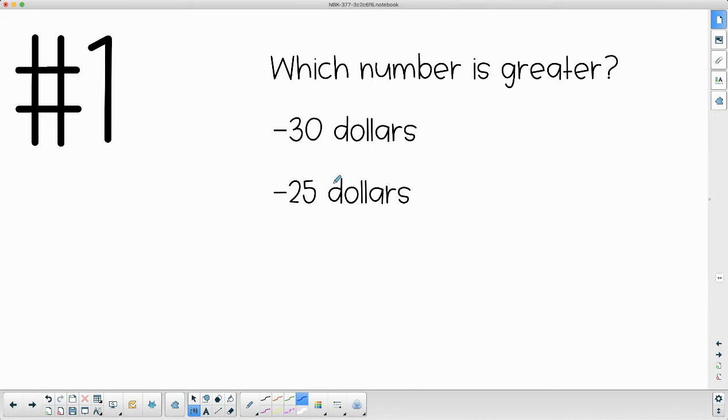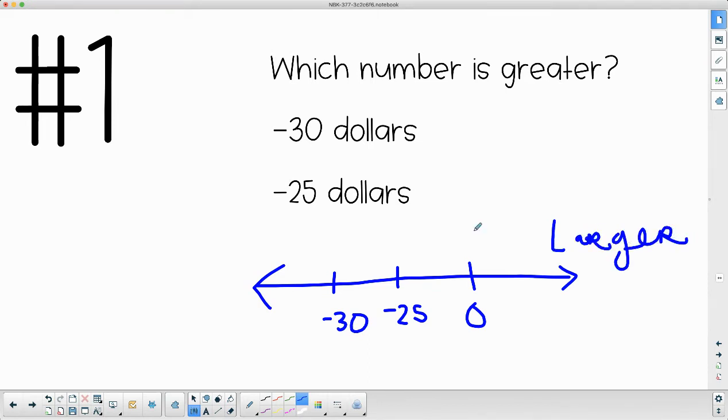Which is greater, negative thirty dollars or negative twenty-five dollars? If you're thinking of them on a number line, here would be negative 25 and here's negative 30. Remember, to the right is always the larger side and to the left is always the smaller one. So when we're looking for what is greater, we want to go with the number farther to the right—sorry, I have to think really hard about left and right. The one farther over to the larger side will be our greater number.